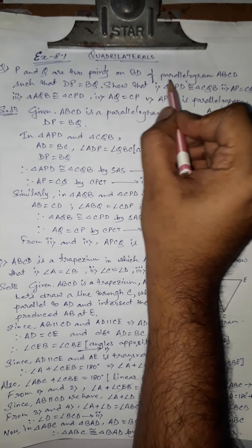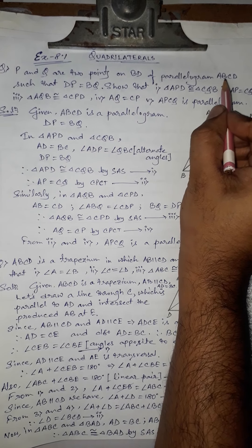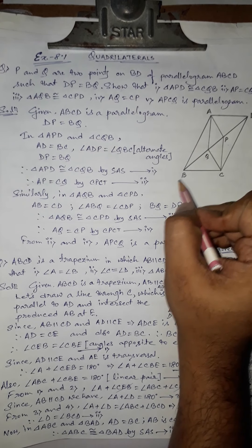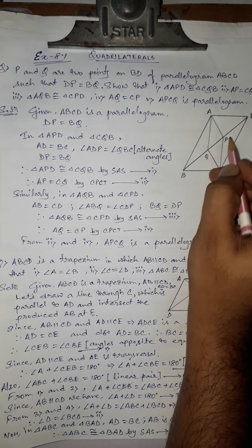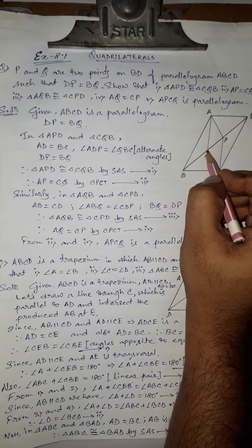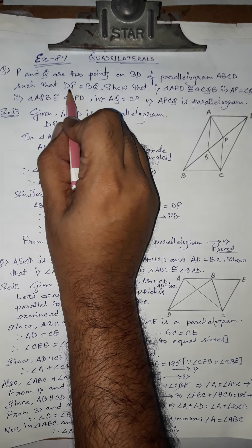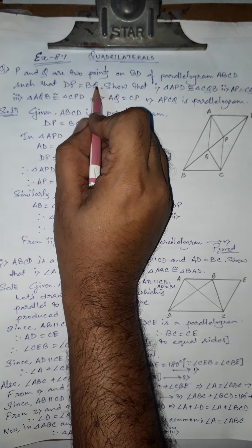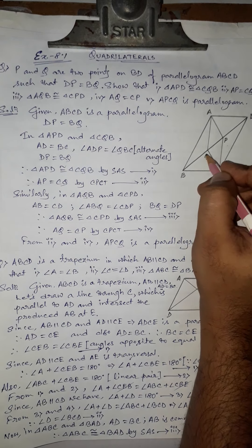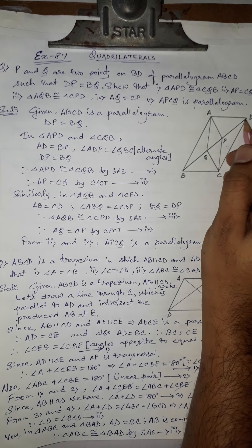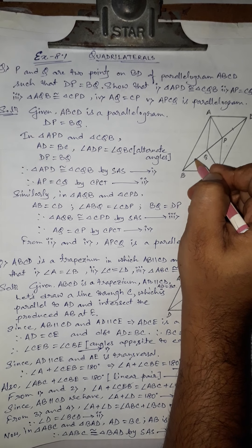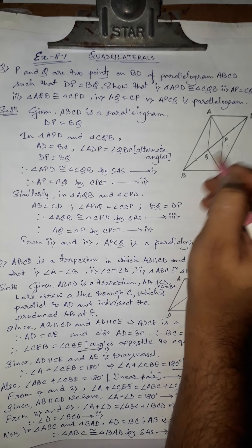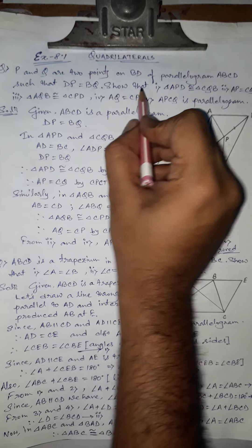The first question is: P and Q are two points on BD of parallelogram ABCD, where BD is a diagonal. P and Q are located on this diagonal such that DP equals BQ — so this part and this part are equal in length.